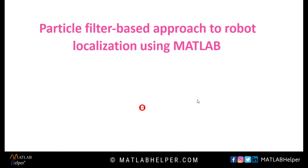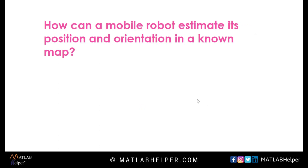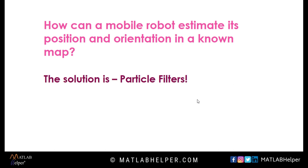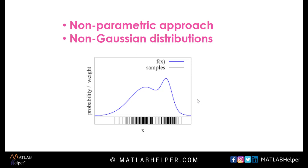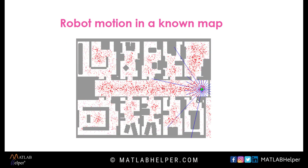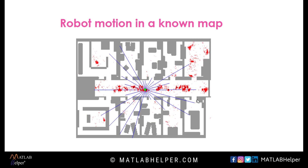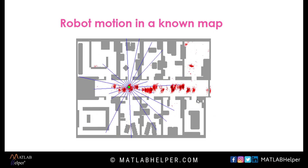How can a mobile robot estimate its position and orientation in a known map? The solution to this is particle filters. Unlike Kalman filters, the probability distribution over the estimated state of the robot can be non-Gaussian distributions. The state space of a particle filter is continuous and not confined to unimodal distributions. Particle filters present an approximate solution like the Kalman filter and are known to scale well in terms of efficiency for tracking applications.